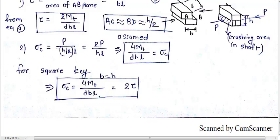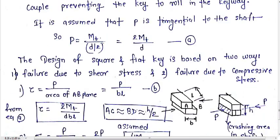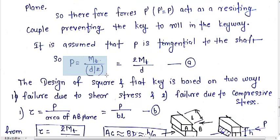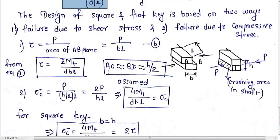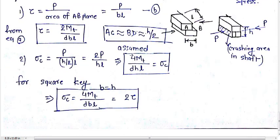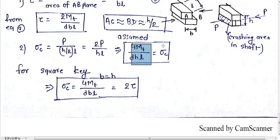It means half the height of key is mounted inside the shaft and half is outside on the hub. So failure will occur in half section. The crushing area is h by 2 into L. Sigma c equals P by h by 2 L, which simplifies to 2P by HL. Putting P equals 2Mt by d, we get sigma c equals 4Mt by DHL.